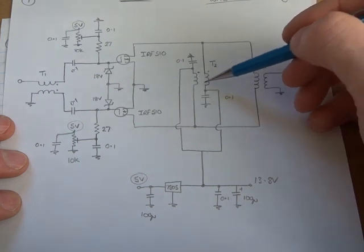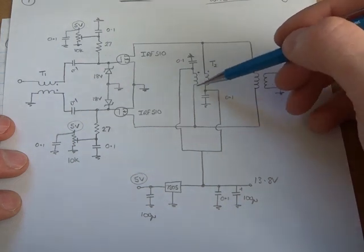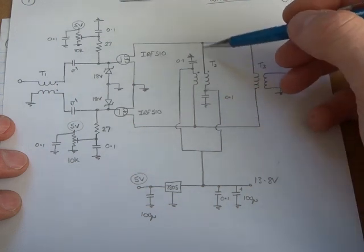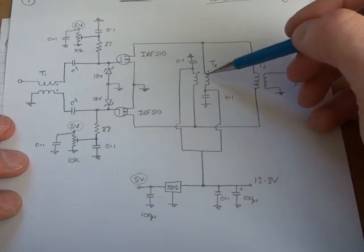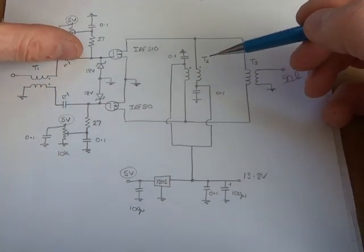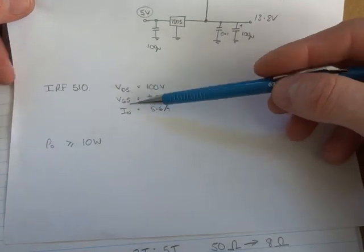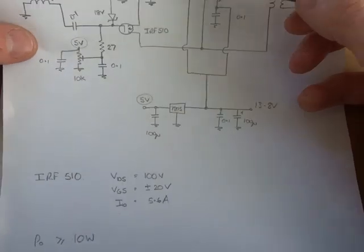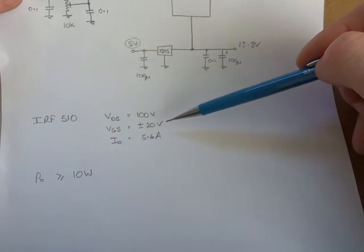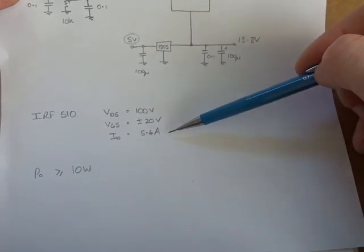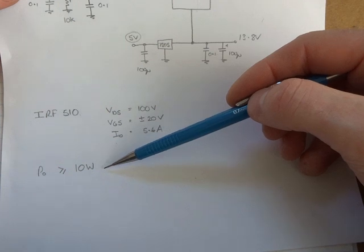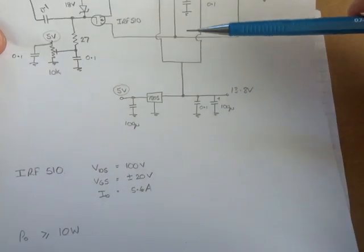That'll be through here another bifilar wound toroid transformer here, which will allow us then to provide that 13.8 volts to the drain without having the RF being sucked to earth. And then just decoupled through another 0.1 microfarad capacitor on either side. So again the specs from the spec sheets talks about a drain source maximum voltage of 100 volts. We talked about VGS so the gate to source being no more than plus or minus 20 volts. And then a max current through to 5.6 amps. And I want to have this sort of just over or around that sort of 10 watts for now. So that'd be nice.